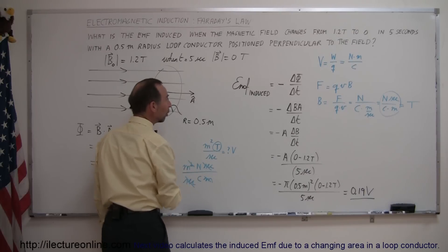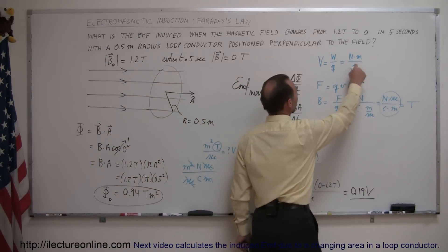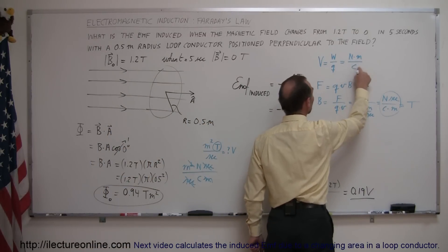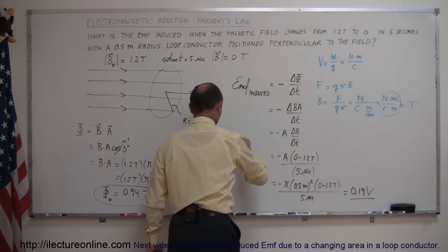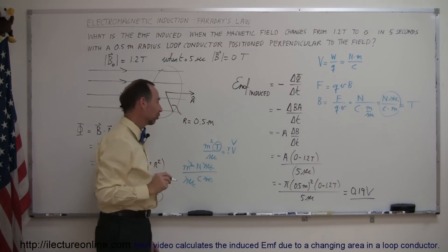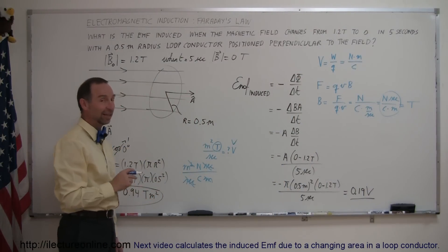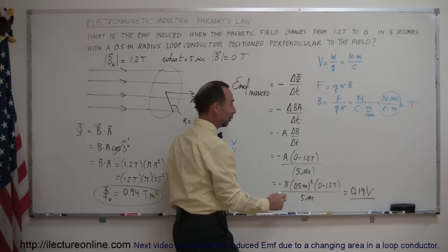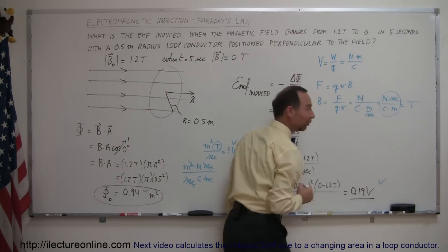so we have meters, newtons per coulomb, and if we go back over here, we have meters, newtons per coulomb, which is volts, and so we've just verified that meters squared times teslas divided by seconds is indeed volts, and we have the correct units over there.